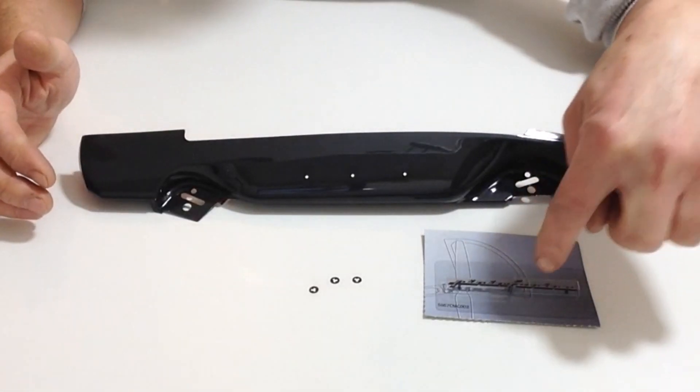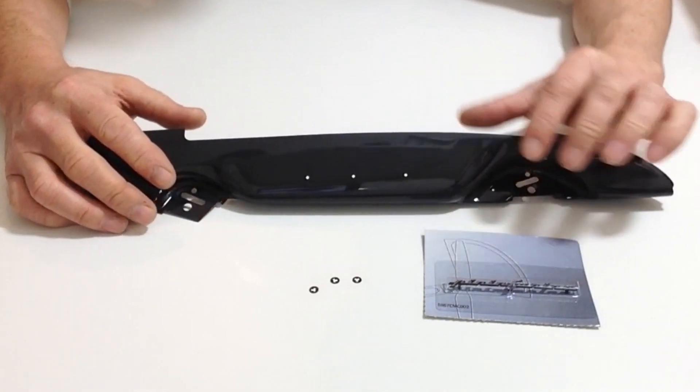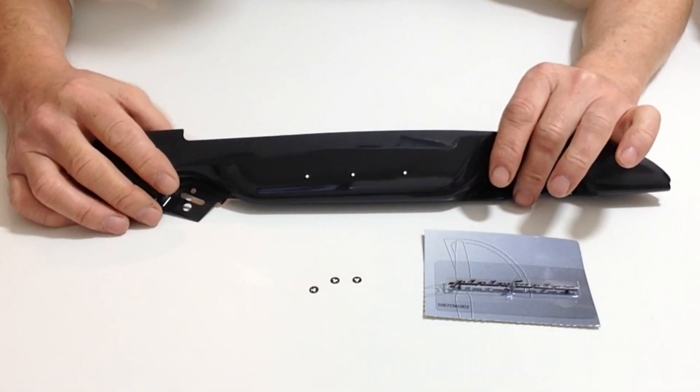In stage 2 we are going to be fitting the Pininfarina badge to the side of the part that we got in stage 2.